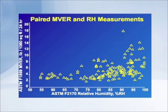First of all, if you look at the dozen or so points all the way over on the right-hand side at the top, you see that any calcium chloride kit value above about 10 pounds tends to indicate there's greater than 90 percent humidity in the slab. The opposite is not true, which we'll talk about in just a minute, but what I take away from this work is that if you do get a very high calcium chloride kit value — let's say above 10 pounds — the floor is wet and the internal relative humidity will very likely be high.